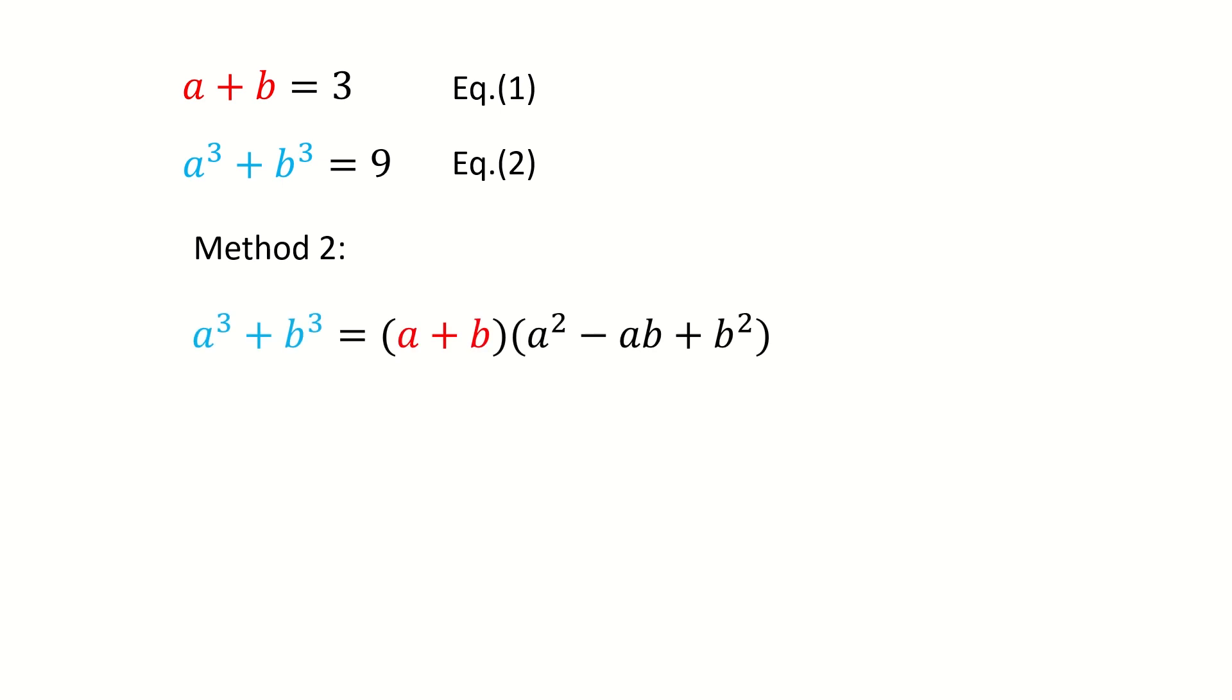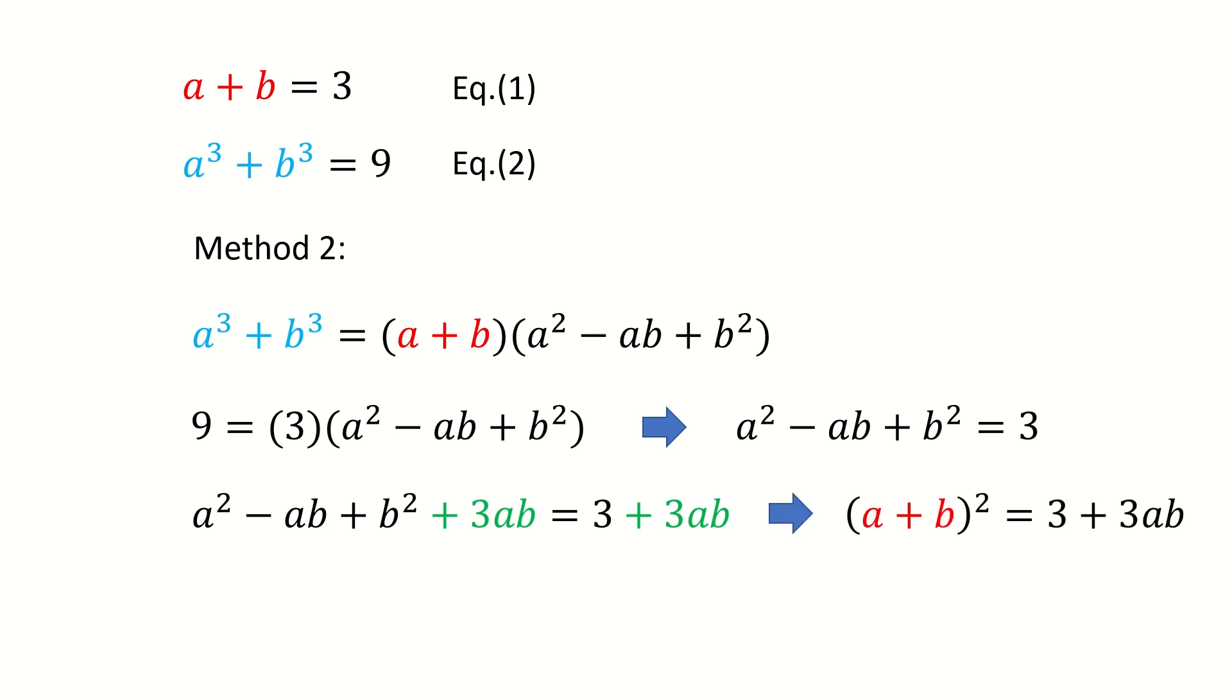For method 2, we use this formula to do the factorization. Then plug in numbers. We got this intermediate step. Next, we add two terms on both sides. In this way, we can complete the square for the left-hand side. Plug in numbers. We got the same equation, ab is 2. So we can see, for both methods, we got identical results, ab is 2.